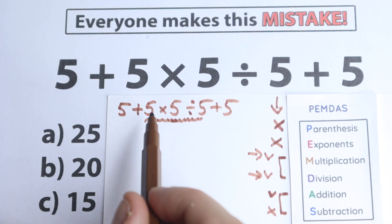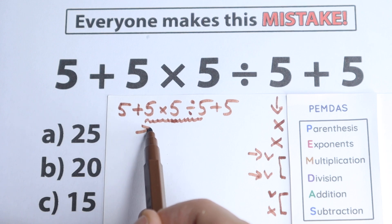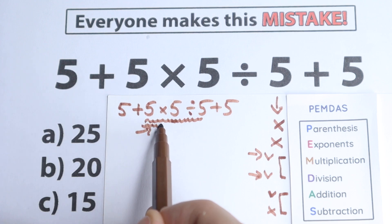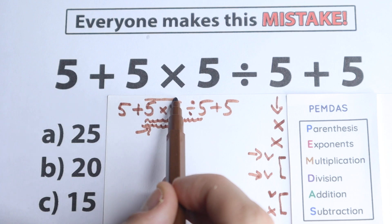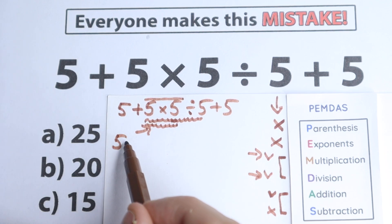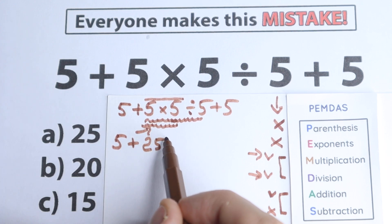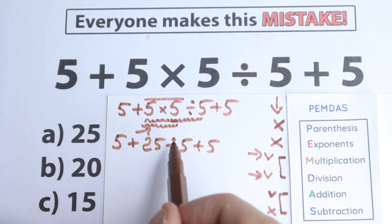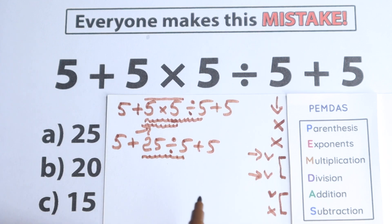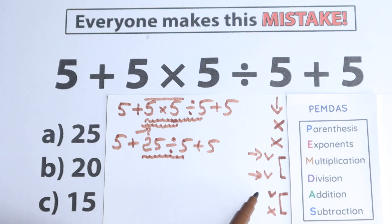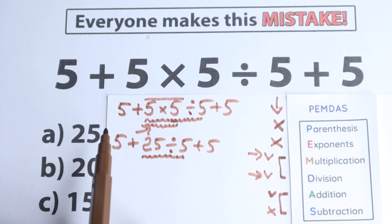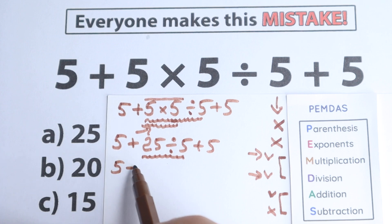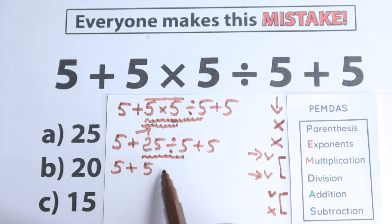Our first expression to solve is 5 times 5. So we have: 5 plus 5 times 5 — that gives us 25 — divided by 5, and plus 5. We still need to divide, because we haven't completed the multiplication and division step. Division and multiplication come before addition and subtraction, so we need to finish all multiplication and division first. Right here we still have one division: 5 plus 25 divided by 5 equals 5 plus 5, giving us 5 plus 5 plus 5.